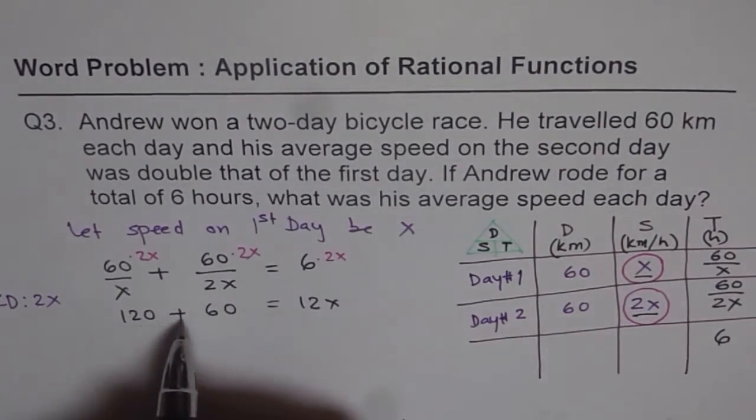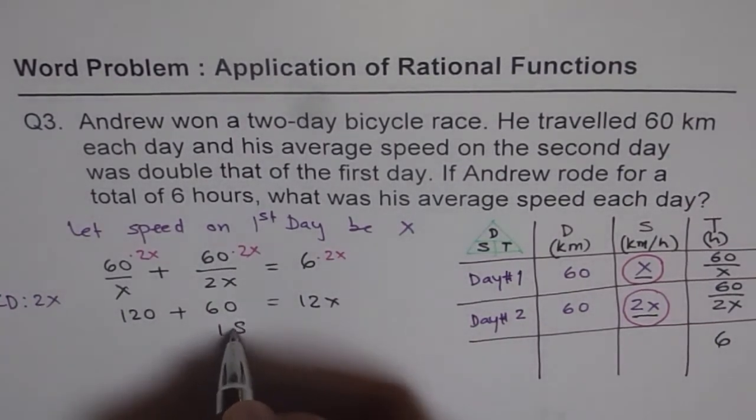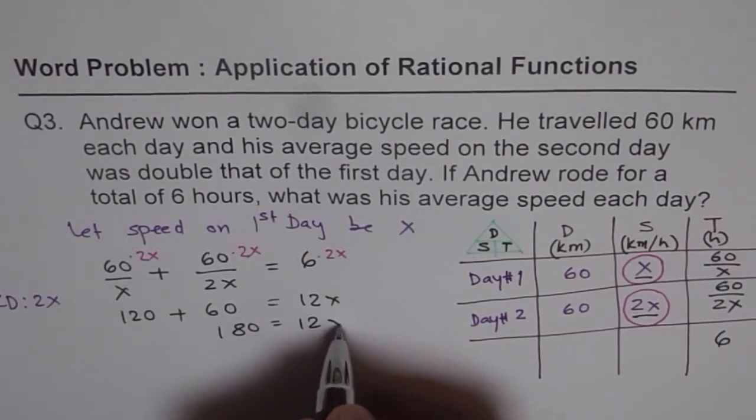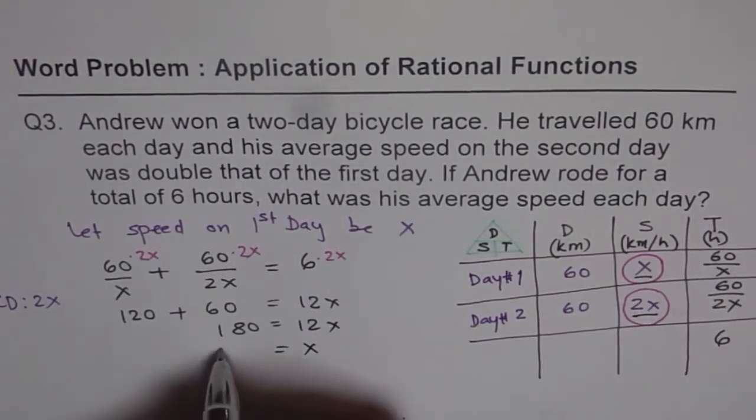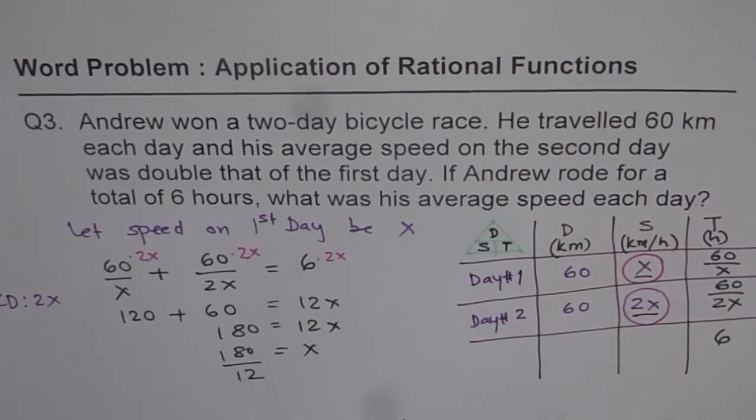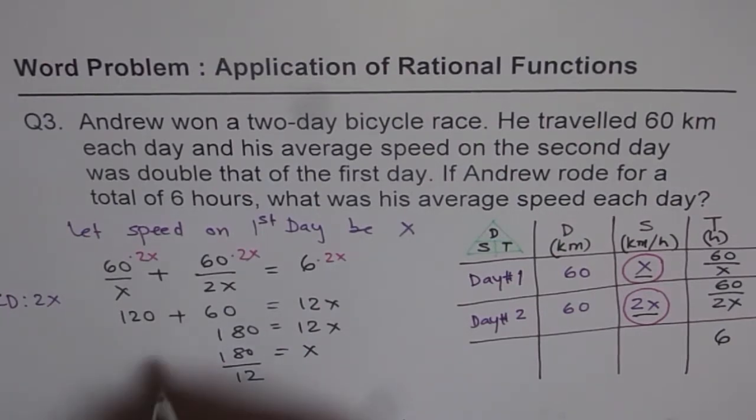Now 120 plus 60 is 180 equals 12x. And therefore, x equals 180 divided by 12. At this moment, take your calculator, divide by 12, and get your answer, which is 15.